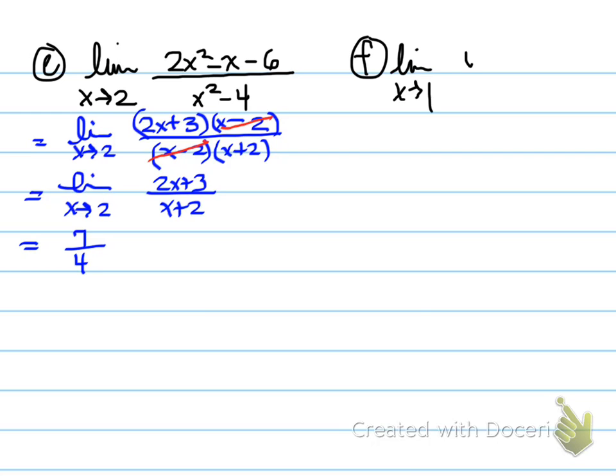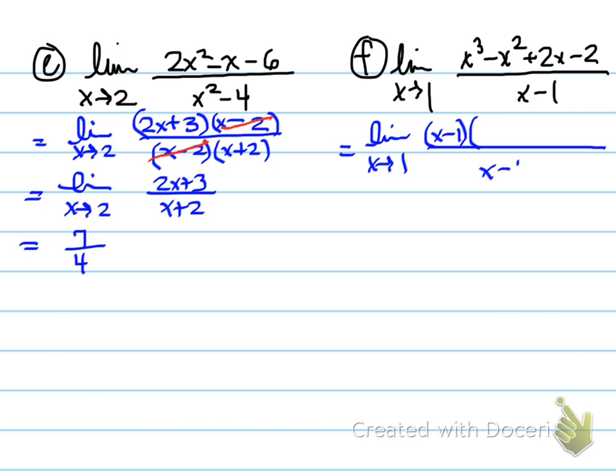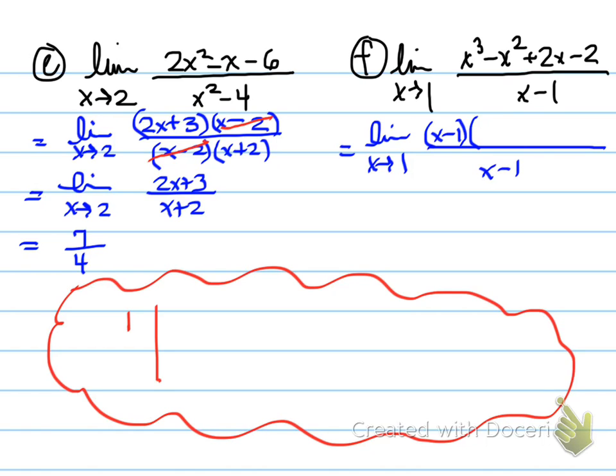F. Limit as x approaches one of x cubed minus x squared plus two x minus two over x minus one. What do we do in this situation? Well folks, what we need to do is something called synthetic division, which you learned in the last unit. Limit as x approaches one of the numerator over the denominator. We're going to use synthetic division. Synthetic division, we need to try and factor to see if this is a factor of this. And it is.